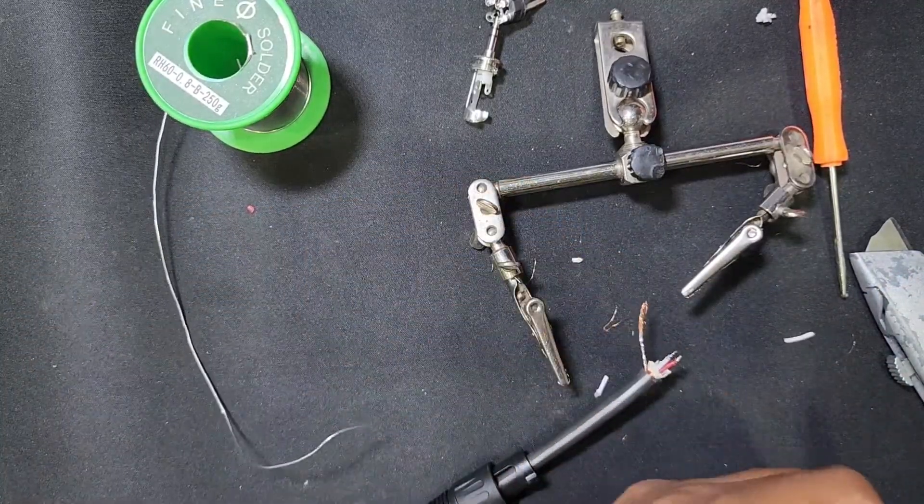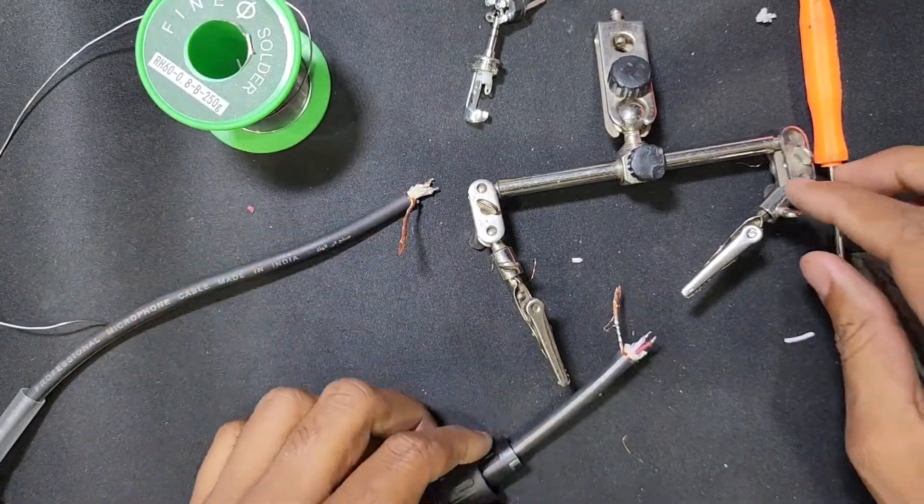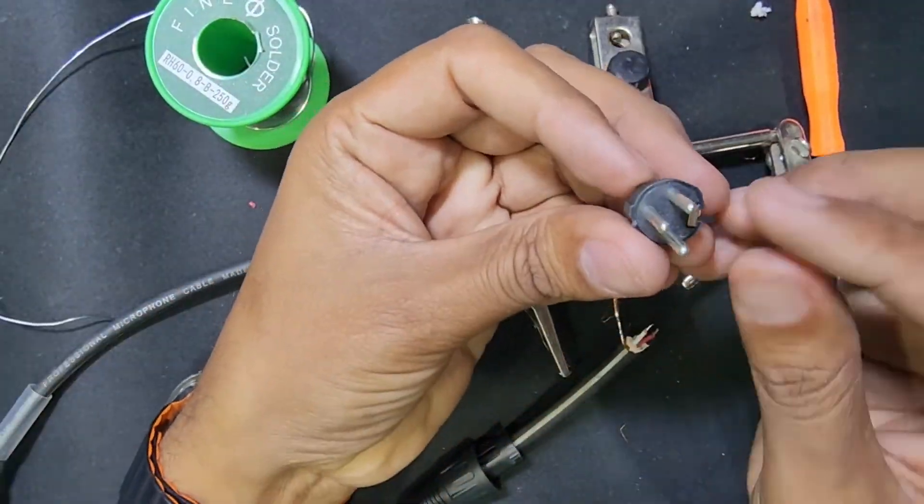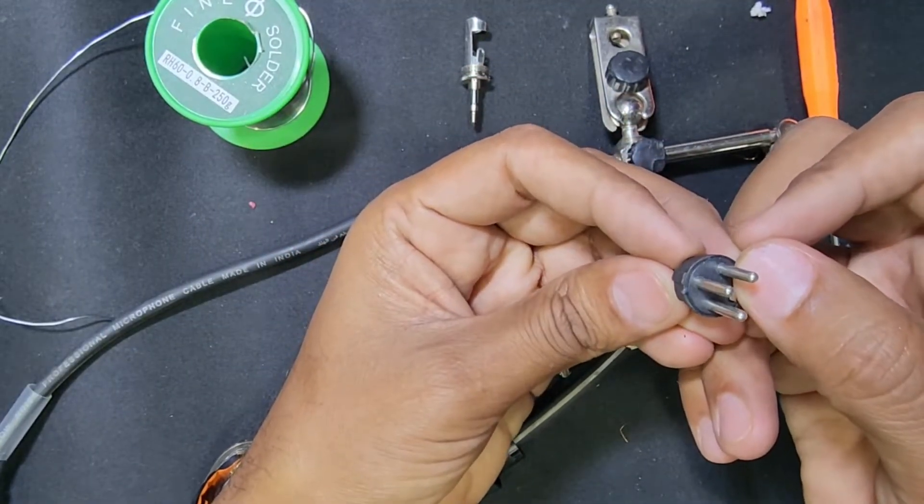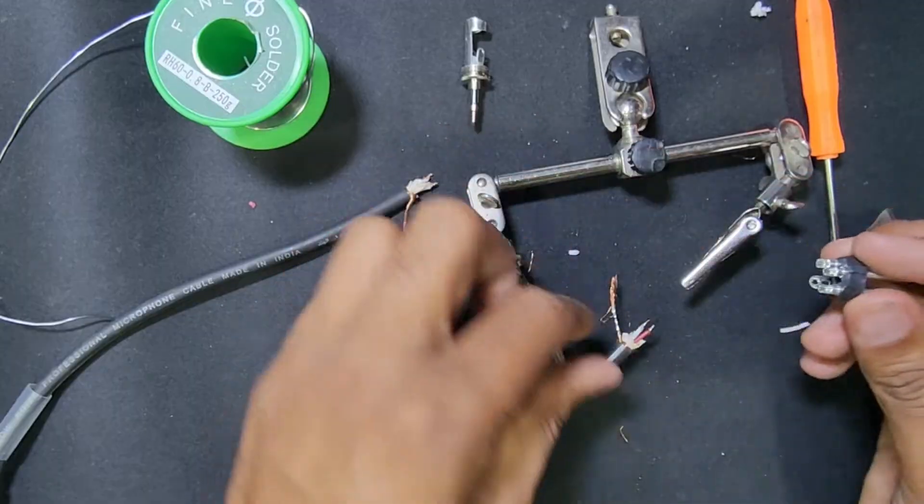I'll cut the extra here. For the DMX connector, there's number one, two, three. Number one is ground, number two and three are the red and white cables.